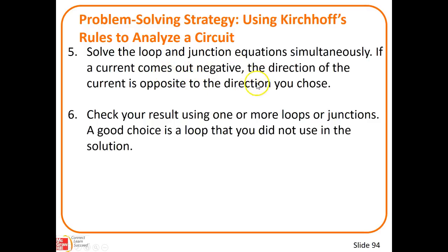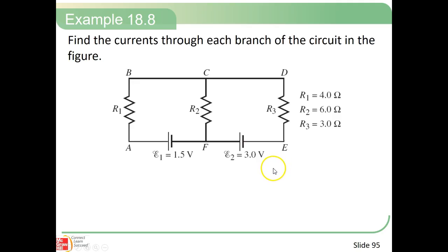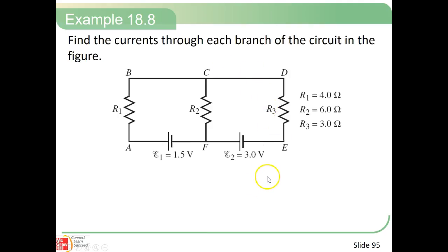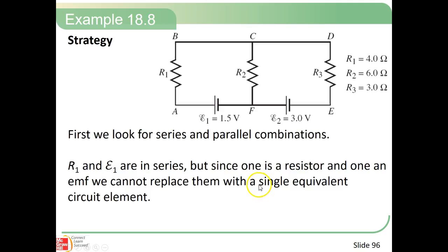If your current comes out negative, the direction is opposite to the direction you chose. Then you have to check your result using one or more loops or junctions. Here's a good example — notice you have two sources of potential, three resistors all with different resistances, and two batteries that are different too. They want us to find the currents through each branch of the circuit. This one's pretty simple compared to some in this section of your book.